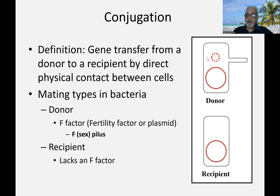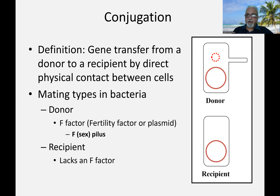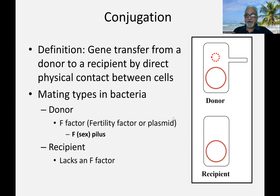What makes this plasmid a fertility plasmid? There are certain genes called tra genes or transfer genes which are responsible for transfer of DNA from donor to recipient. This plasmid also contains certain genes responsible for initiating cell-to-cell contact. Let me talk a little about these plasmids to help you understand what they are.